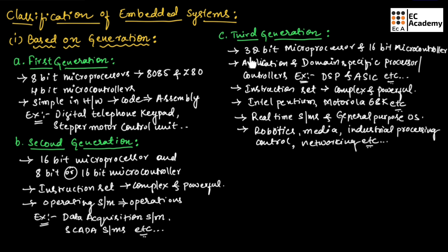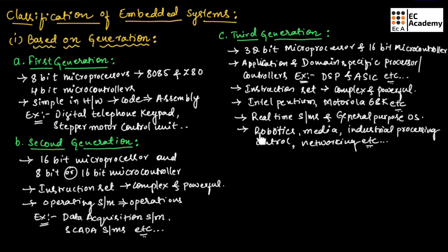In the third generation, dedicated real-time systems and general purpose operating systems were introduced. These embedded systems were also helpful in designing robotics, media, industrial processing, control, and networking applications.